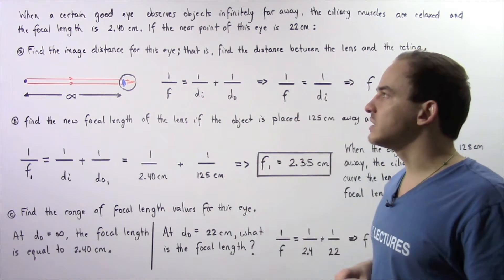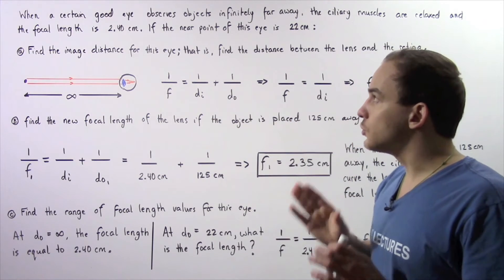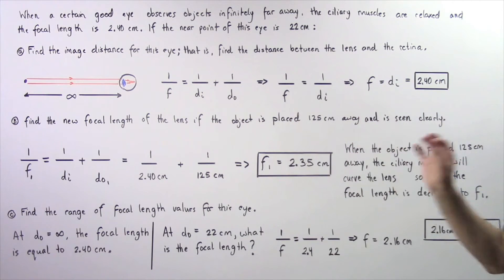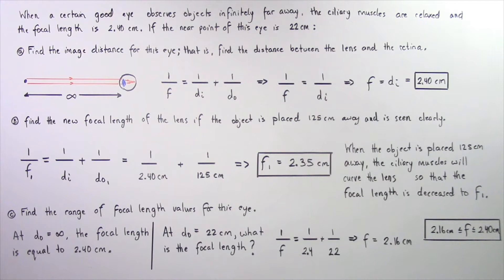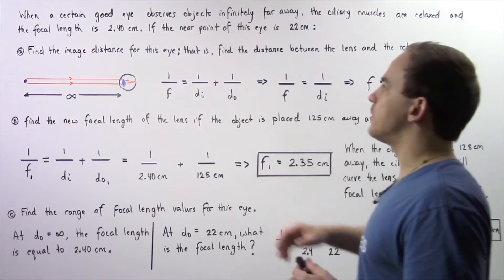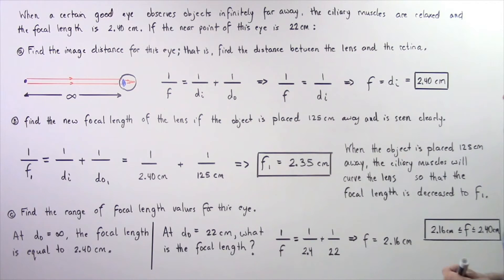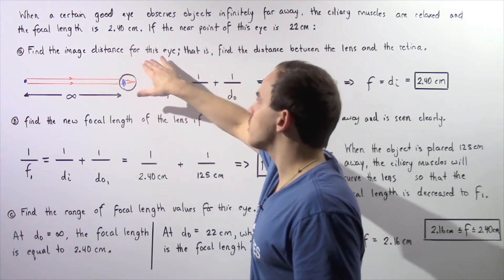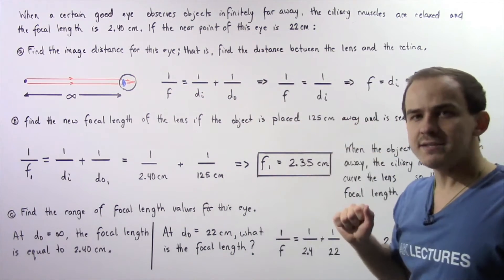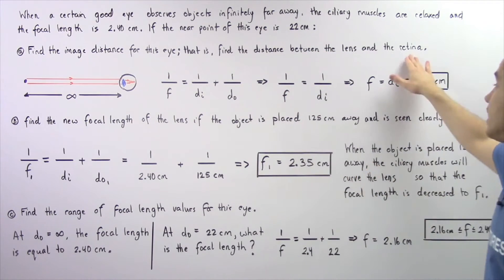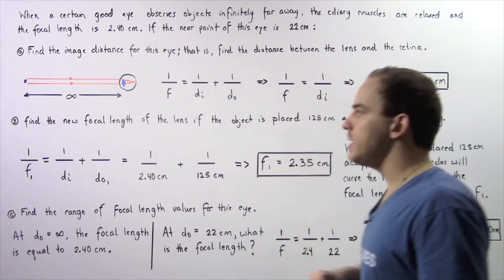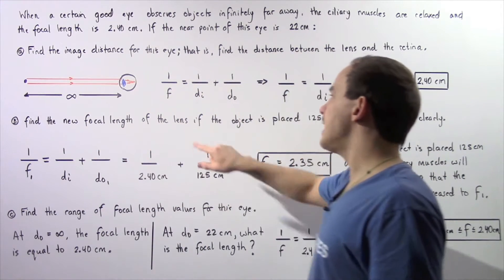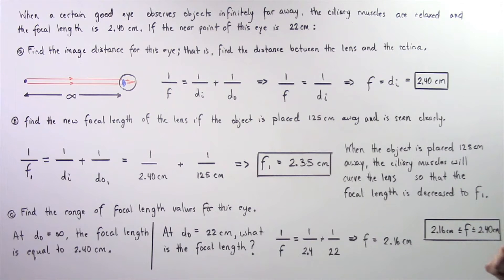Using this concept, let's look at the following example. When a certain good eye observes objects infinitely far away, the ciliary muscles are fully relaxed, and the focal length of the lens is 2.4 centimeters. Now, if the near point of the eye is 22 centimeters, in part A, find the image distance for this eye — that is, find the distance between the lens of the eye and the retina of the eye. In part B, find the new focal length of the lens if the object is placed 125 centimeters away from the eye and is seen clearly.